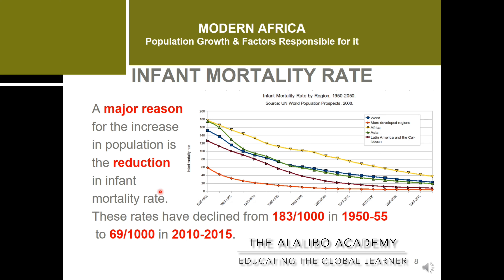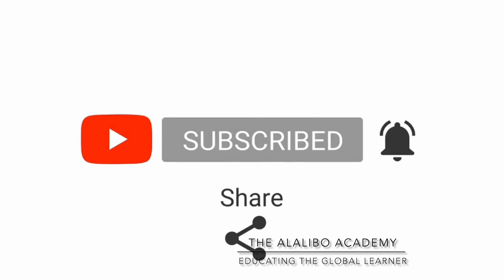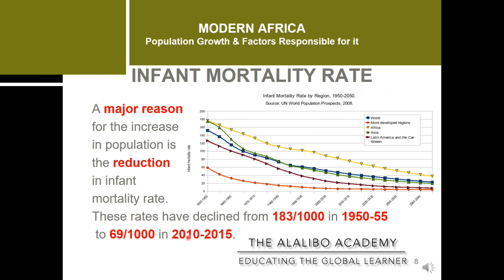Let's take a look at the numbers. The rates have declined from 183 deaths for every 1,000 births in 1950–55 to 69 deaths for every 1,000 births by 2015. This is more than a 100% decline in death rates, and this is very good news — children are dying less after birth, and that is adding to the population increase.